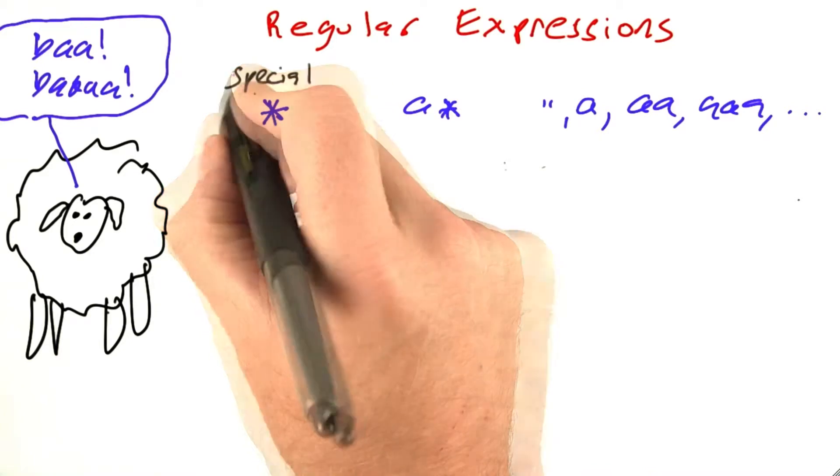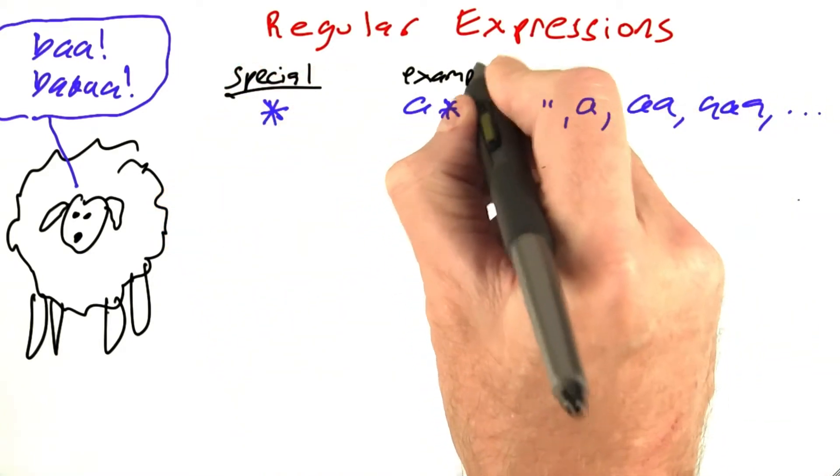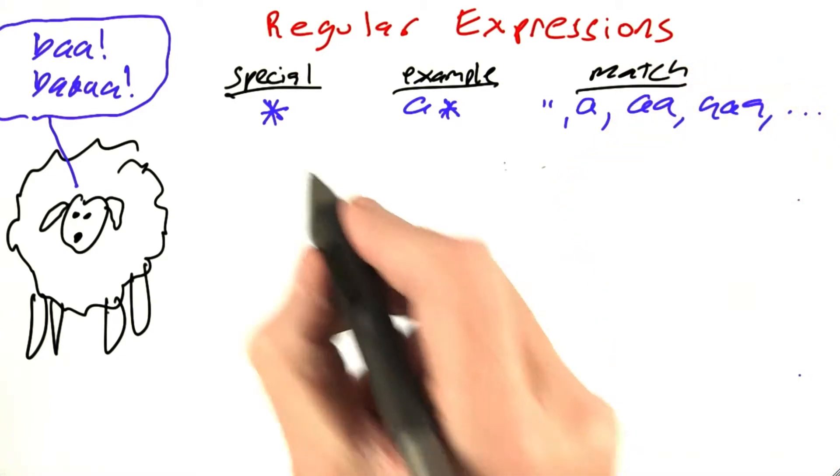So let's make a list of the special characters, examples of their use, and what they match. So we've seen the asterisk.